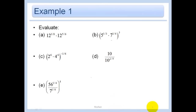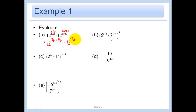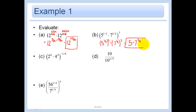I immediately see I have the same bases and I'm multiplying, so I add the exponents. I want a common denominator — 24. Multiply by 3 and then multiply by 4. 5 times 4 is 20. So I add 3 over 24 plus 20 over 24 and I get 12 to the 23 over 24. Here I cannot combine different bases, so I do 5 to the 1 third cubed — which gives 5 — times 7 to the 1 fourth cubed, giving 7 to the 3 fourths.